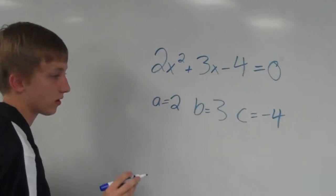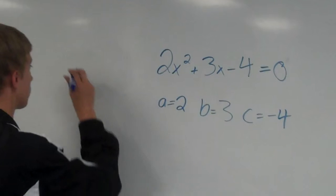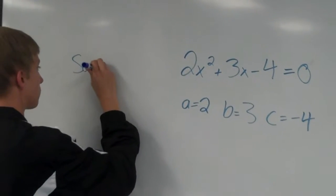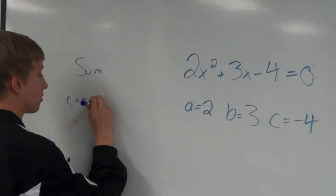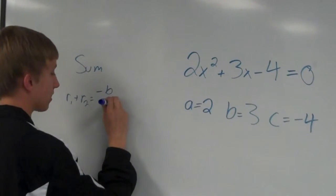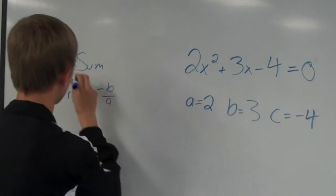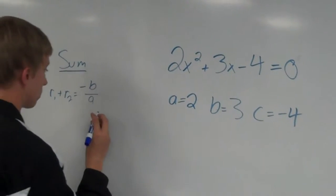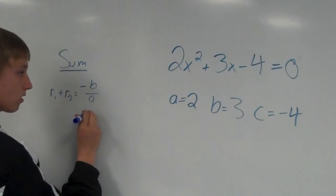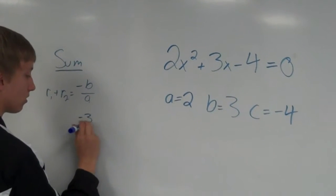Now, there's a different equation for both sum and product. For sum, it is root 1 plus root 2 equals negative b over a. From here, I can take a and b and plug them into the formula. I get negative 3 over 2,